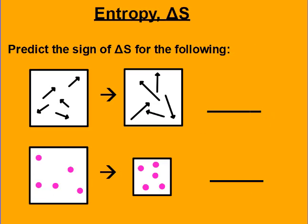Now try doing the same thing but using particle diagrams. For the first one, this is a lower temperature — we know that from the arrows being shorter. This one is going to be a higher temperature. Higher temperatures have more disorder, so that's going to be a positive delta S.